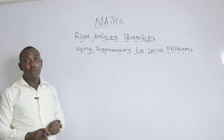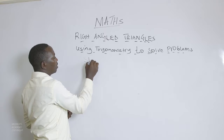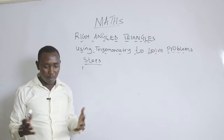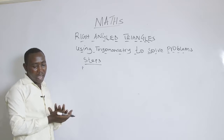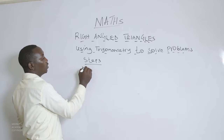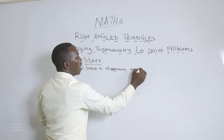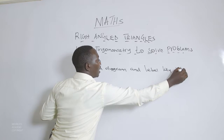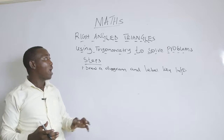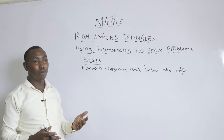There are steps normally followed whenever you want to solve a problem using the trigonometry approach. The first step is to draw a diagram and label the key information from the given data. For example, you may be given one of the angles or one of the sides, and because of the trigonometric ratios we have learned, we can apply them to solve the given problems.